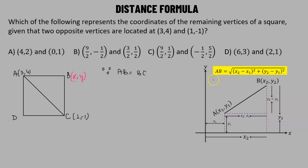For this, we'll use the distance formula. So if we have two points A and B, where A has coordinate (X1, Y1) and B has coordinate (X2, Y2), the distance between them is the square root of (X2 minus X1) squared plus (Y2 minus Y1) squared. Using the distance formula, let's first find the value of AB.